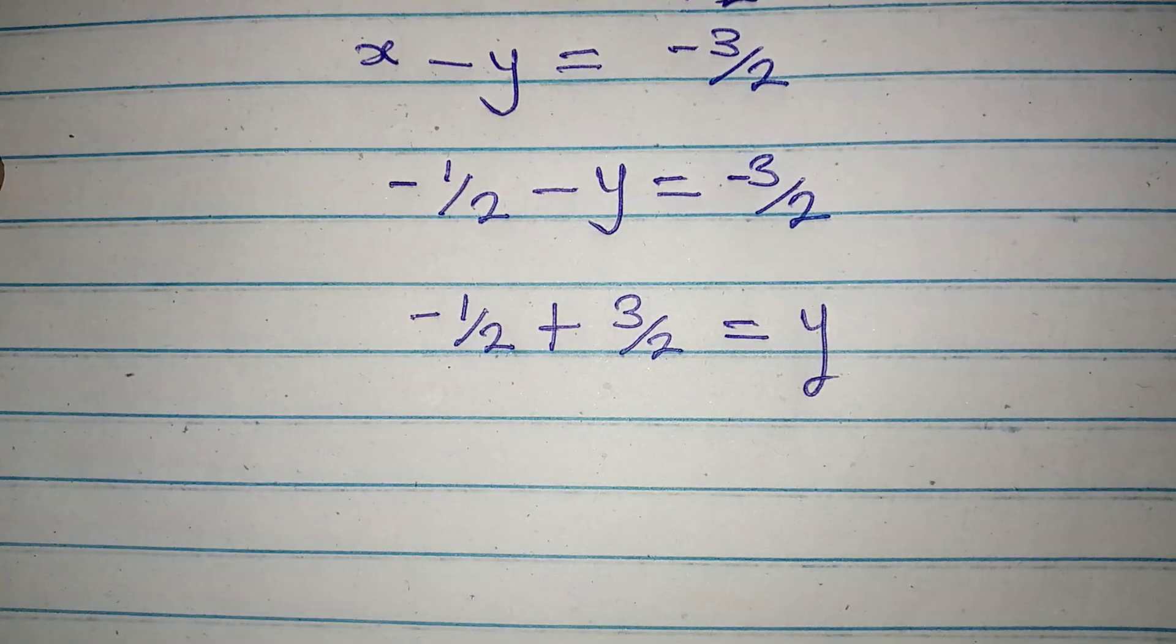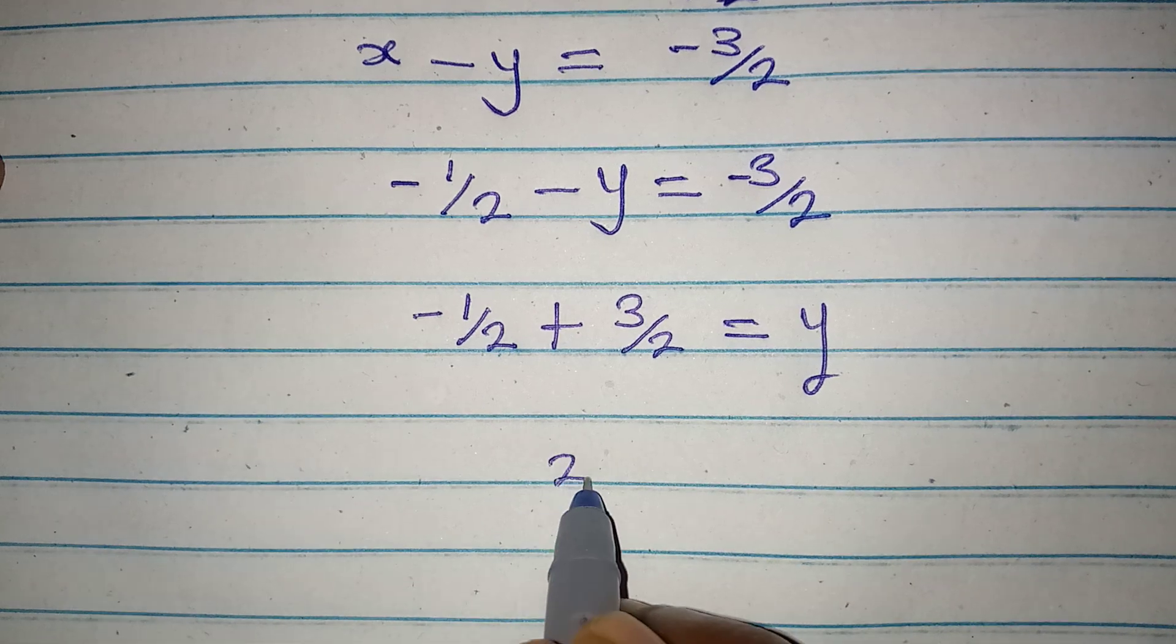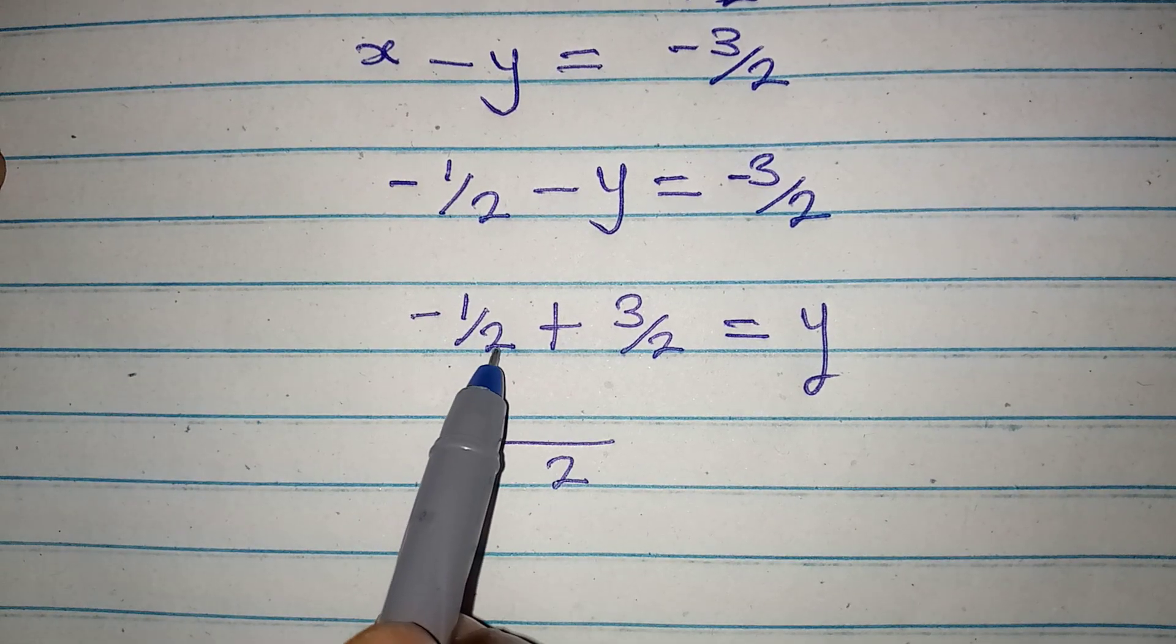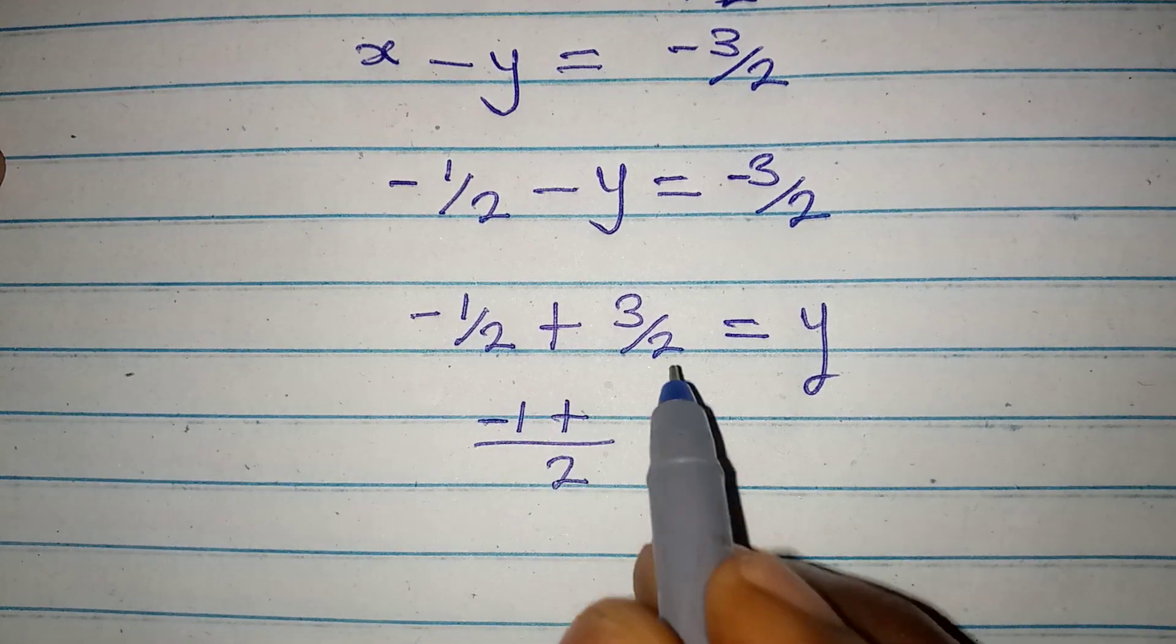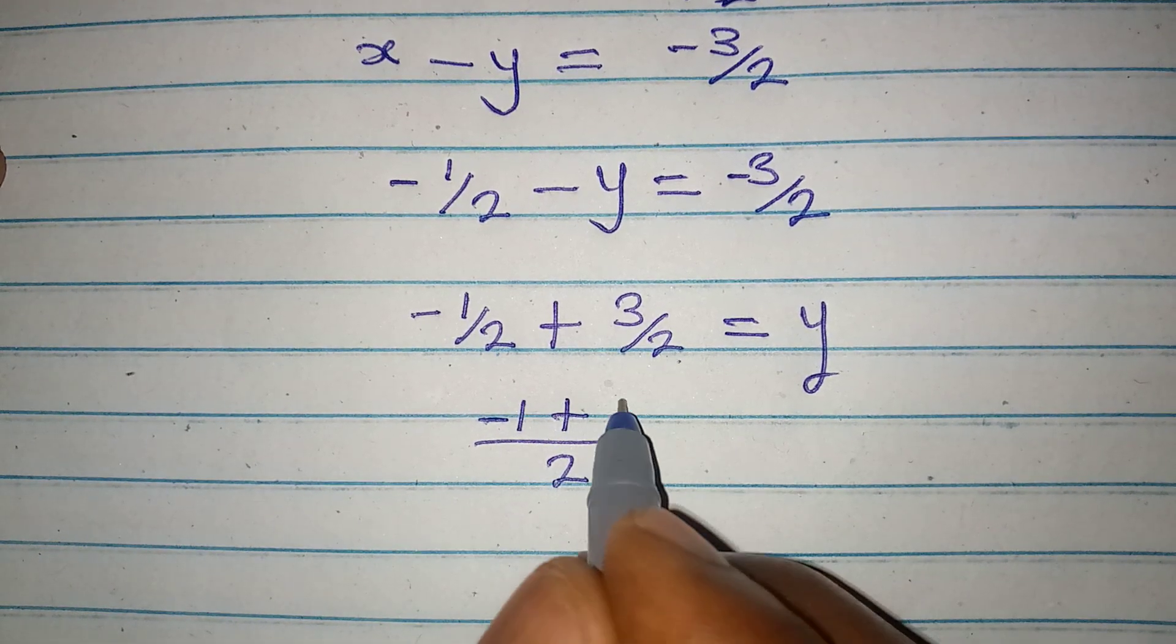Now find the LCM. So the LCM will be 2. Then 2 divided by 2 is 1 times minus 1 is minus 1. Then plus 2 divided by 2 is 1 times 3 is 3.